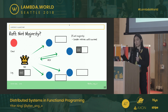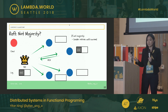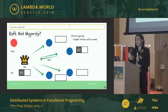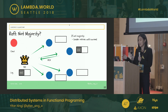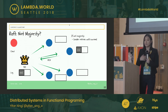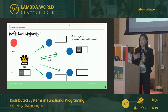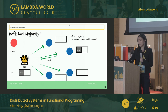What happens if we didn't get a majority of responses from the servers when asking them to append entries to their log? If we only got one response, which is not a majority, the leader will just retry and keep sending append entry RPCs until it gets a majority amount of responses.